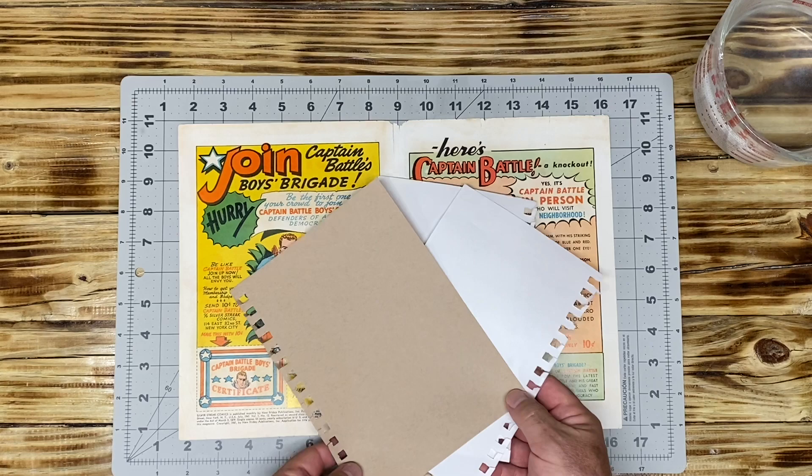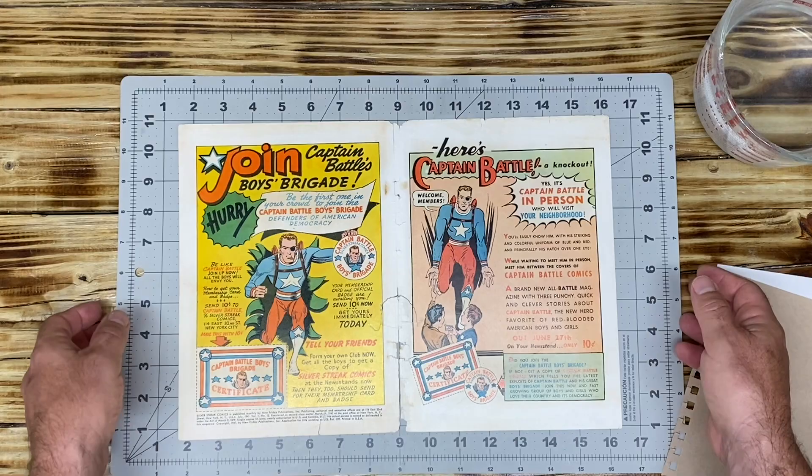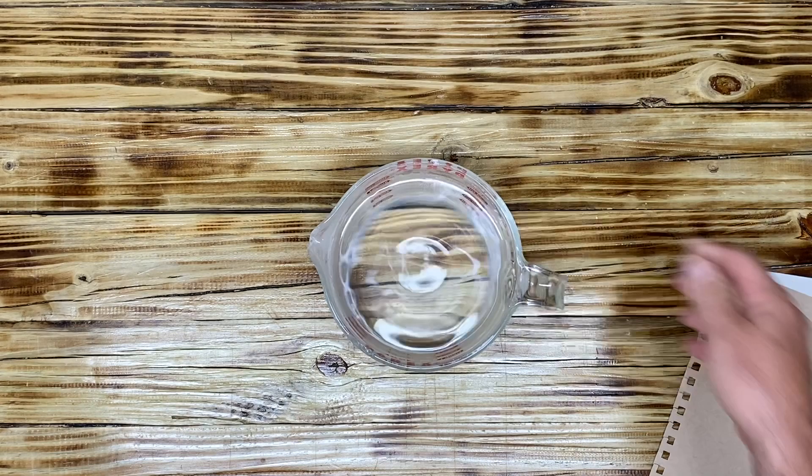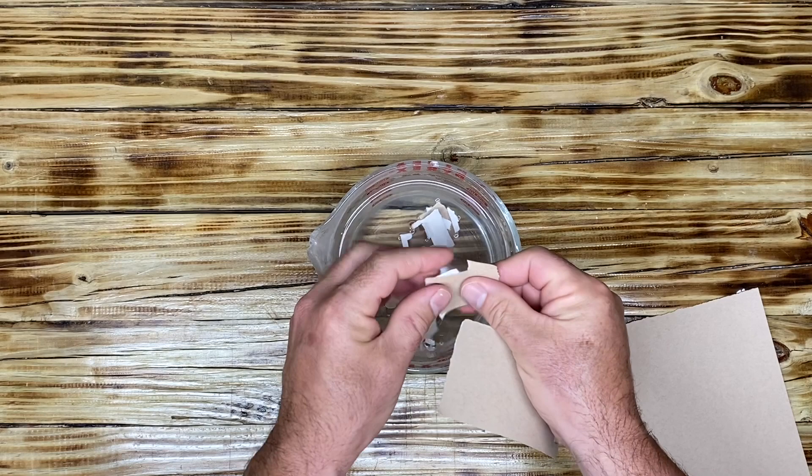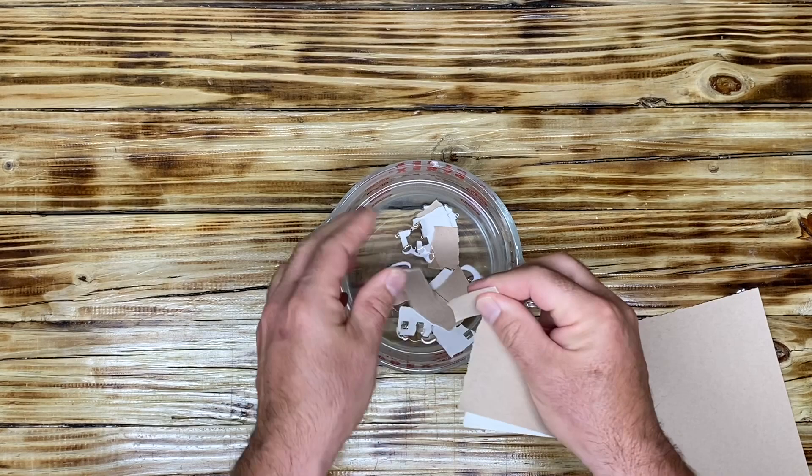What do we do to make the pulp? It's very simple. We have our water and I want to just rip it up into little pieces. This was one of the issues I had doing the leaf casting in the past - I did not let the actual pieces of paper soak enough.